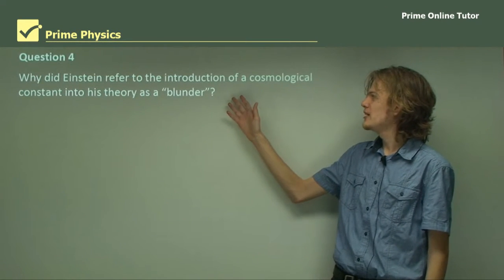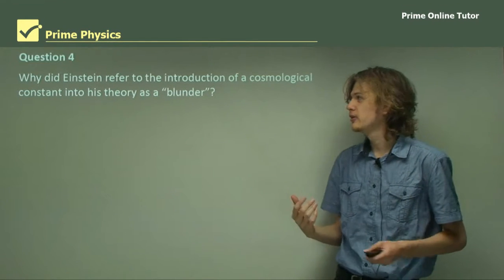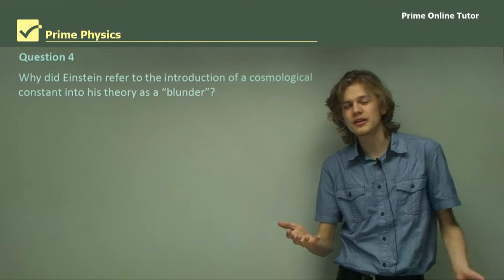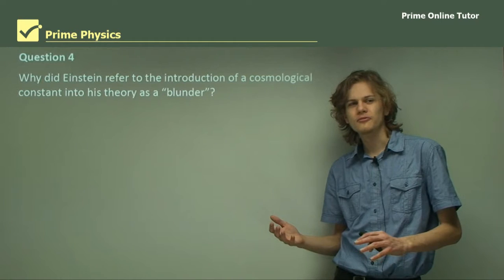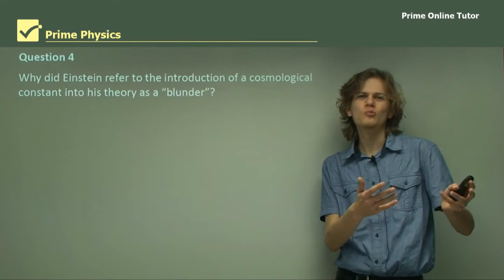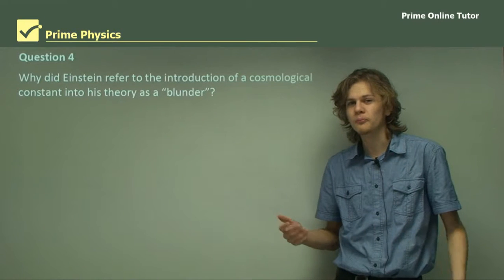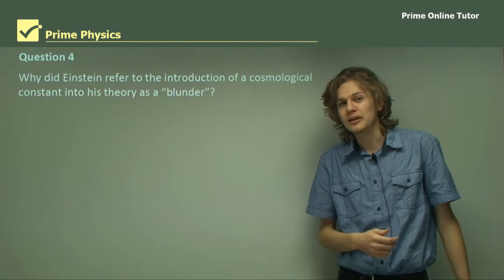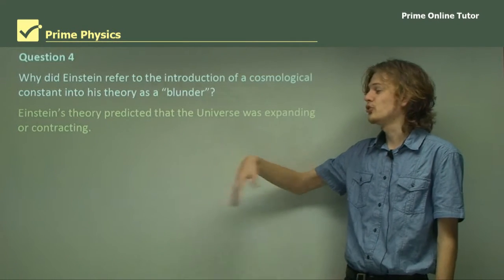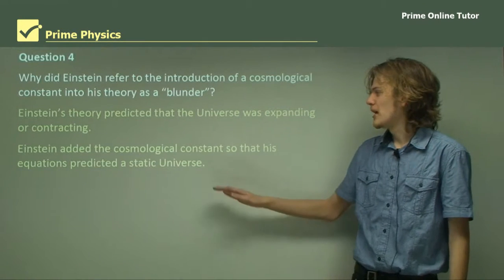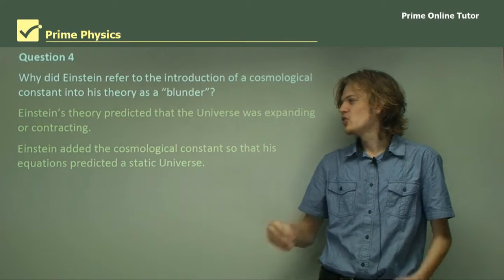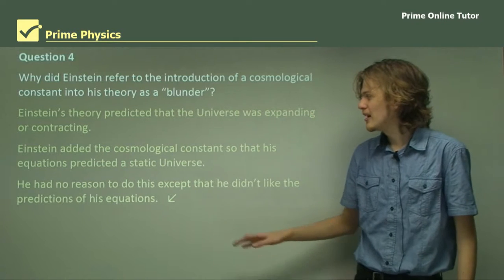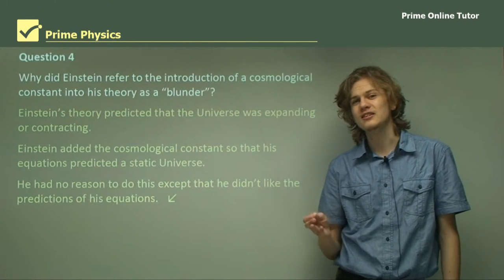Question 4. Why did Einstein refer to the introduction of a cosmological constant into his theory as a blunder? And this is a particularly interesting question, because in the recent years of cosmology, a lot of cosmologists have sort of come back to the idea of a cosmological constant and wondered if perhaps Einstein was right, after all. But of course, the answer here is that Einstein didn't really have a basis for putting it in. Einstein's theory predicted that the universe was expanding or contracting, as we know. And Einstein added the cosmological constant so that his equations predicted a static universe. As far as we can tell, that's the only reason that he put it in.